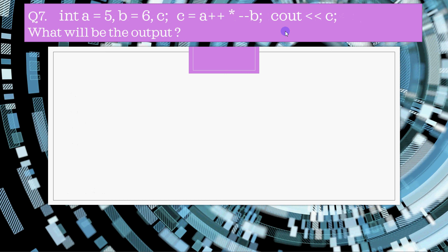Question seven: A is 5 and B is 6. c is written as A++ multiplied by minus minus B. You have to find the value of c. This is post-increment for A and pre-decrement for B — pre and post operators are a very important topic with many exam questions. Since minus minus B is pre-decrement, B decreases first from 6 to 5. Then A (currently 5) multiplied by B (now 5) equals 25. Although A increases to 6 after the statement, we are only printing c, so c equals 25.